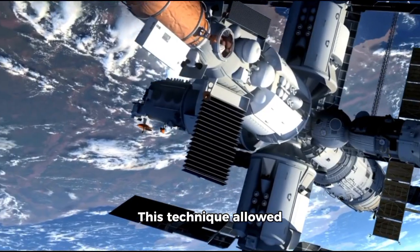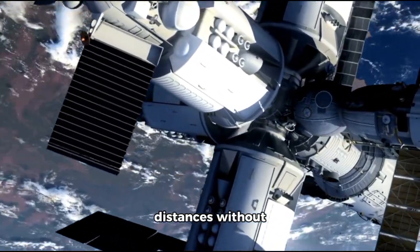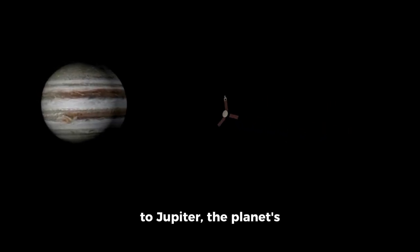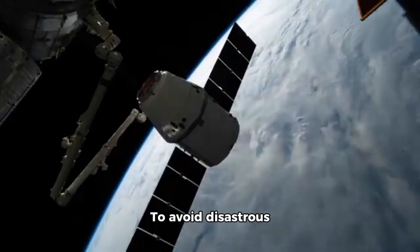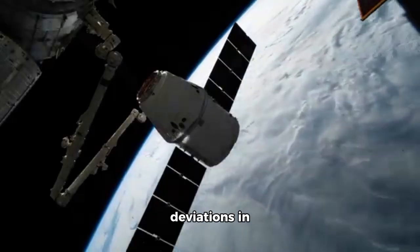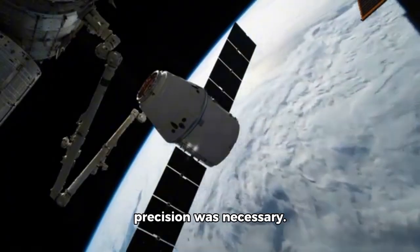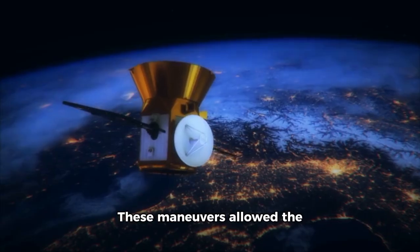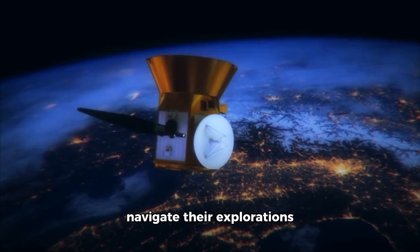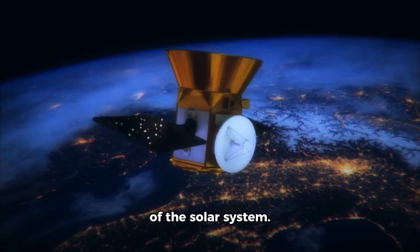This technique allowed them to travel vast distances without depleting their supply of fuel. As Explorer 1 got closer to Jupiter, the planet's immense gravity sped up the spacecraft. To avoid disastrous deviations in trajectory or speed, precision was necessary. These maneuvers allowed the spacecraft to effectively navigate their explorations of the solar system.